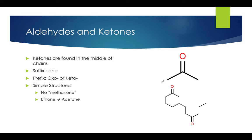Now let's move on to ketones. Ketones are found in the middle of the chain, so they'll be numbered. The suffix for ketones is '-one,' and the prefix is '-oxo' or '-keto' — keto is easy to remember as in ketones. You need at least three carbons to make a ketone, so there is no methone or ethone. The smallest possible ketone you can get would be propanone, but we refer to it as acetone.